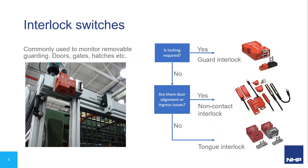Firstly, interlock switches. These are commonly used on removable guards on machinery to monitor whether the guard is in place. If the guard is removed or left open, the machine is not allowed to operate in a hazardous manner. As you can see from the image on the left, there's a typical installation with a tongue interlock switch monitoring a sliding guard. When the guard is closed, the actuator enters the switch and closes its contacts allowing the machine to operate. When the guard is slid open, the actuator is removed, the contacts open, and the machine turns off.